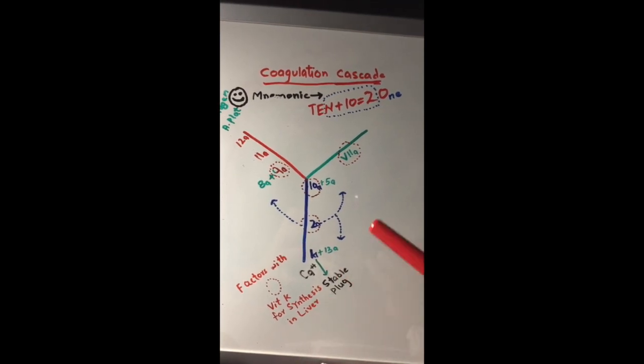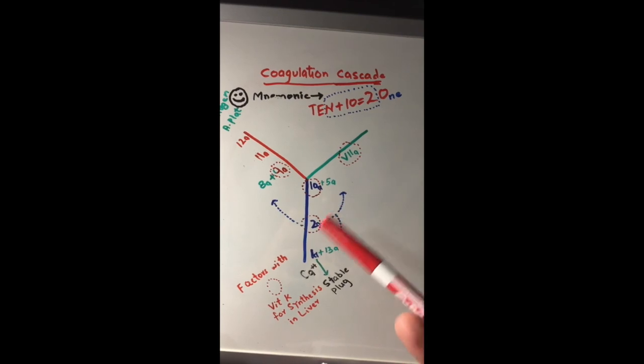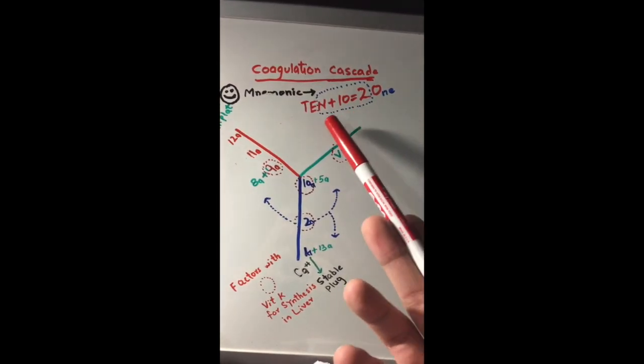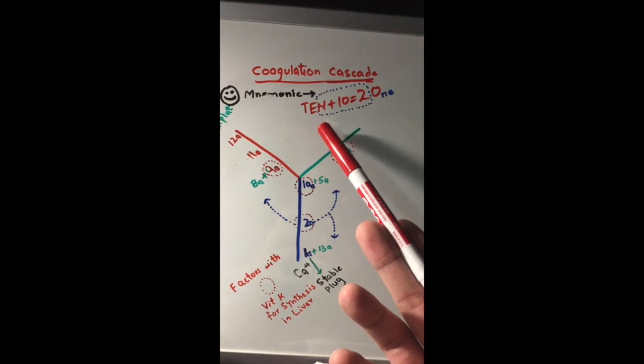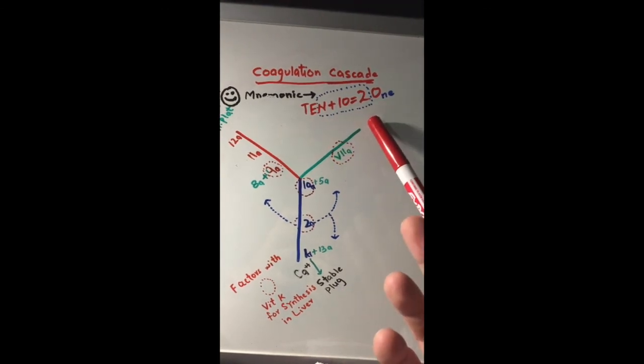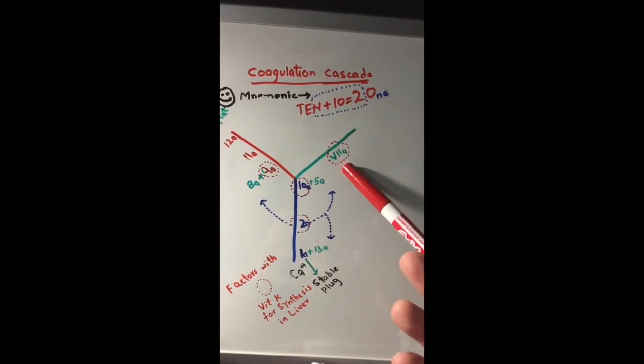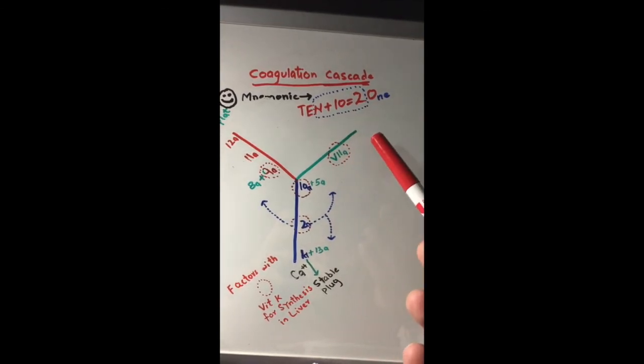You can memorize it by watching this diagram or use our mnemonic. 10 is in the middle, you take one from left side and one from right side. So it's 9, 10, 2, and of course the extrinsic pathway factor 7. Thank you very much.